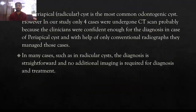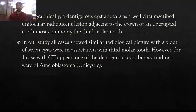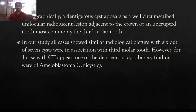Periapical cyst, also known as radicular cyst, is the most common odontogenic cyst. However, in our study only 4 cases out of 45 scans were seen, because clinicians are very confident and see no need for biopsy in many such cases. Radicular cysts diagnosed clinically do not require additional imaging for treatment. Dentigerous cysts appear well-circumscribed on radiology and are attached to the crown of an unerupted tooth, most commonly the third molar. In our study, out of 7 patients, 6 were associated with a third molar tooth. One patient with typical dentigerous cyst findings opted for biopsy, which turned out to be unicystic ameloblastoma.